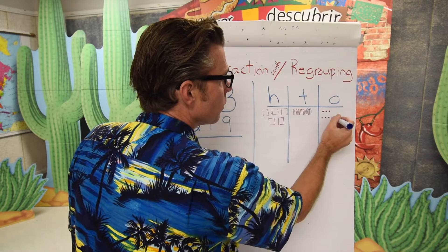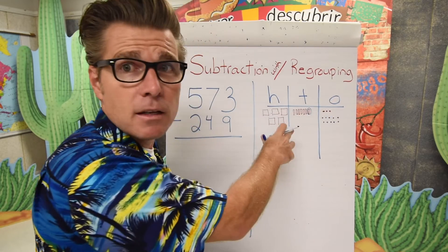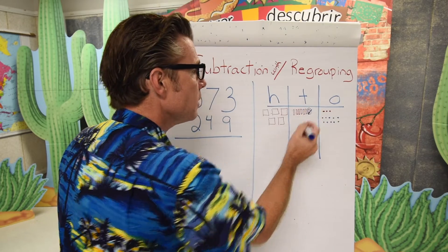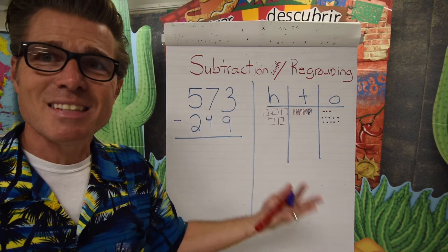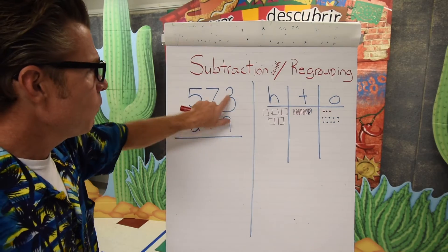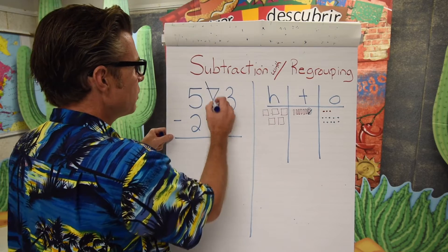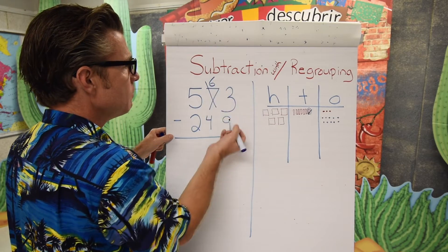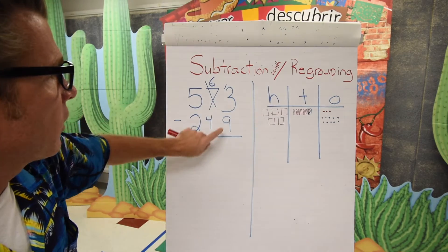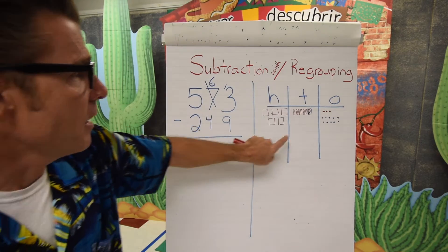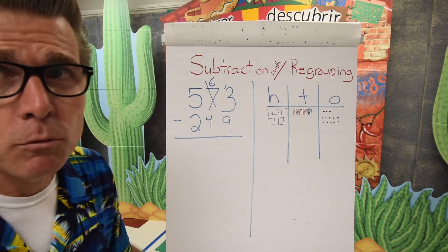We count out ten ones — one through ten. Now that ten is gone, so we mark through that ten, leaving only six tens remaining. In our traditional notation we come over to the seven, mark through it, put a six up, and add one to the three. So we have thirteen in the ones column — we've added ten more for a total of thirteen ones.